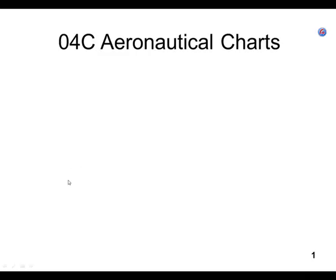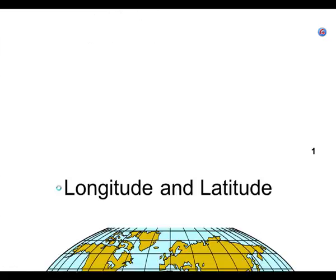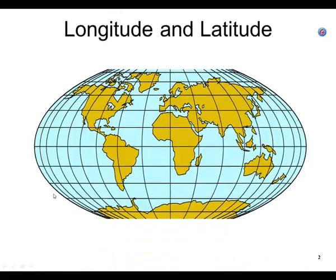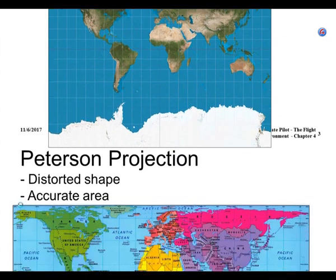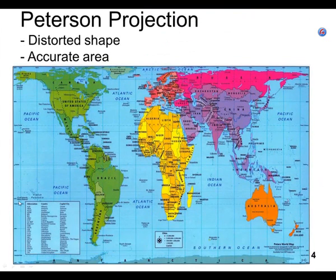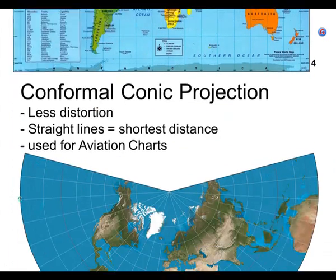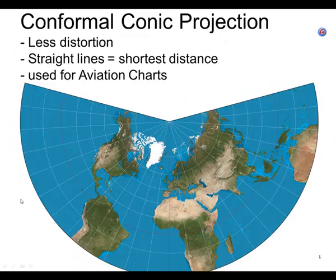We're on O4C aeronautical chart — we'll call this part two. Peters projection, we did that one. I remember being on this slide and talking about this slide, but I'll look at the video in any case. This is why we use conformal conic projections.